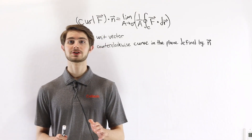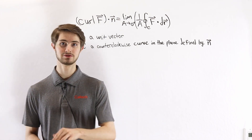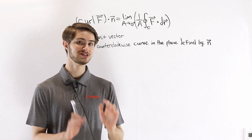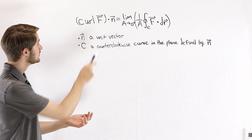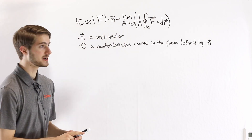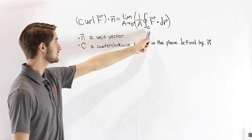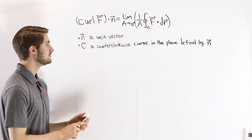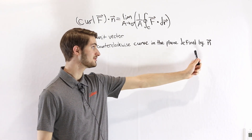We're going to talk about curl, which is an important property of vector fields that exists at every point on the vector field. One definition of curl that we're going to use, because it's useful for building understanding, is that the curl of a vector field F at some point dotted with n is equal to the limit as a approaches 0 from the right of 1 over a times the line integral over some closed curve C of F dot dr. In this case, n is a unit vector and C is a counterclockwise closed curve in the plane defined by n.